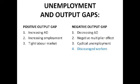Finally, looking at unemployment and output gaps: in a positive output gap there's lots of aggregate demand, which leads to increasing employment as people are needed to produce goods to meet demand. This creates a very tight labour market where almost all workers are employed, so wages have to increase for firms to attract the few remaining available workers — leading to a wage-price spiral, which is bad for inflation.